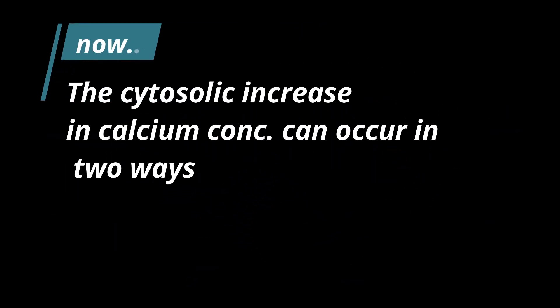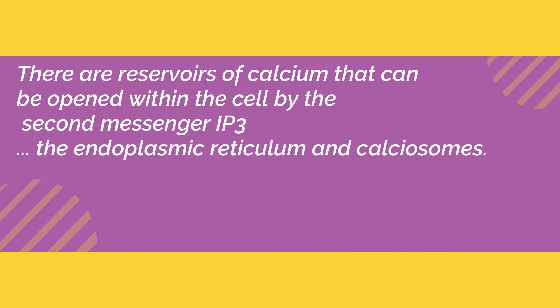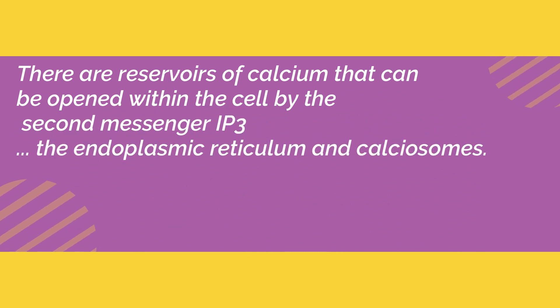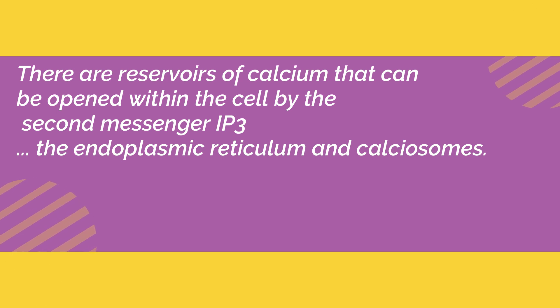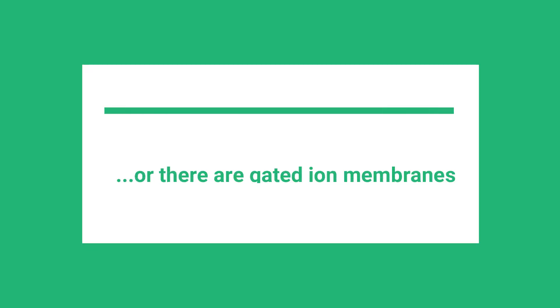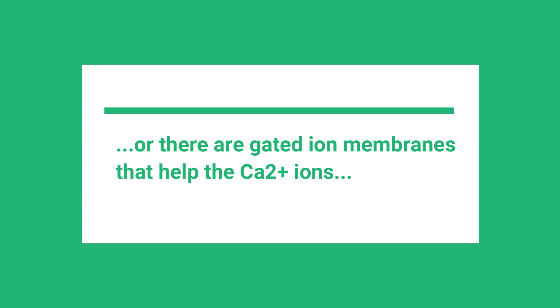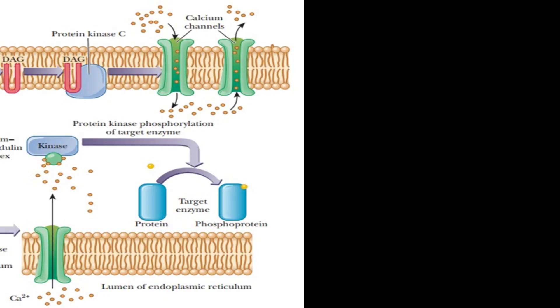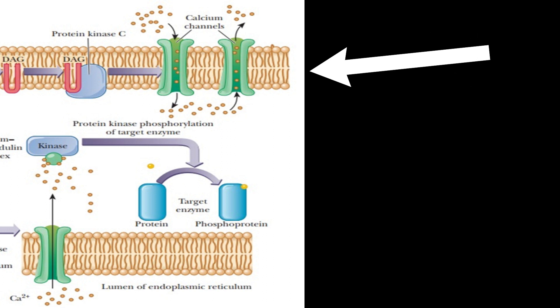The cytosolic increase in calcium concentration can occur in two ways. There are huge reserves that can be opened within the cell by the IP3 second messenger from the endoplasmic reticulum and the calcium stores. Or, there are gated ion channels in the membrane that help calcium ions get out of or come into the cell.